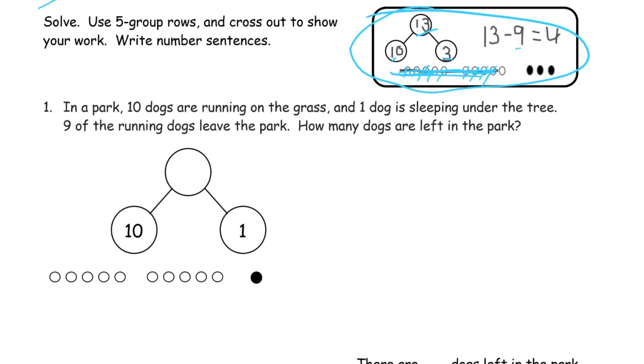In a park, 10 dogs are running on the grass, and one dog is sleeping under the tree. So here's the 10 dogs that are running, and here's the one that's sleeping under the tree. Nine of the running dogs leave the park, so nine of them leave. How many dogs are left in the park? Well, there's that one from the 10, and one more. That's two.